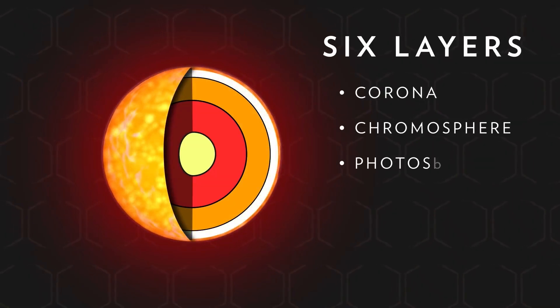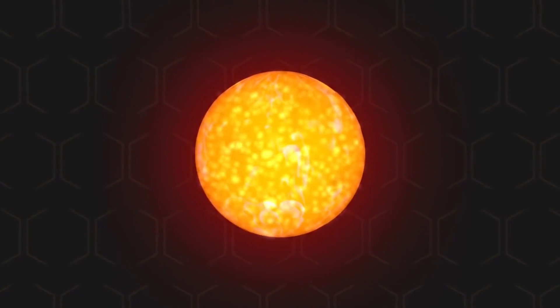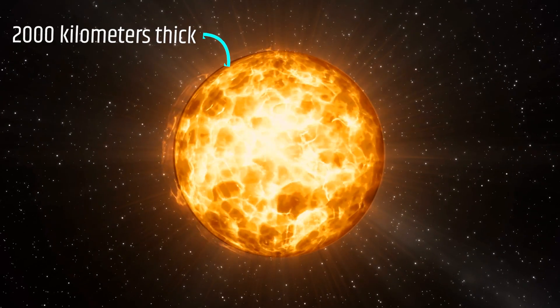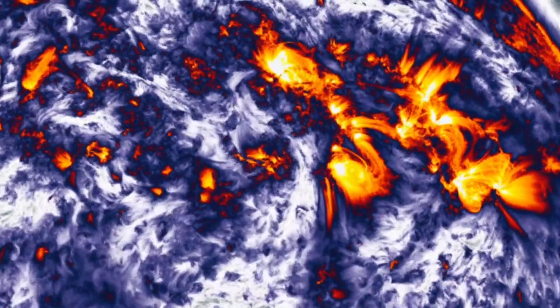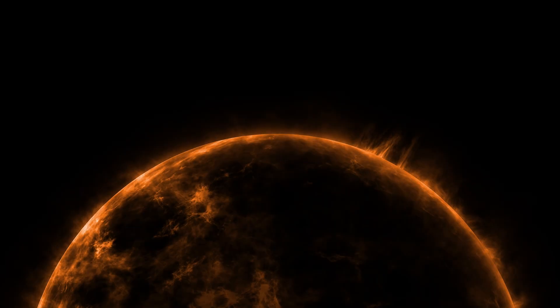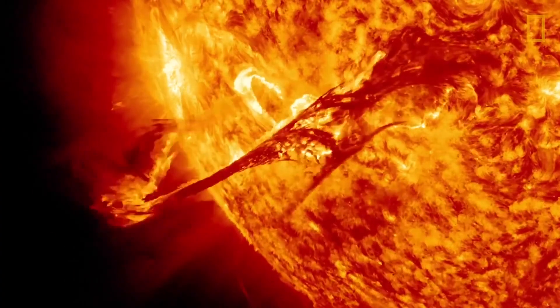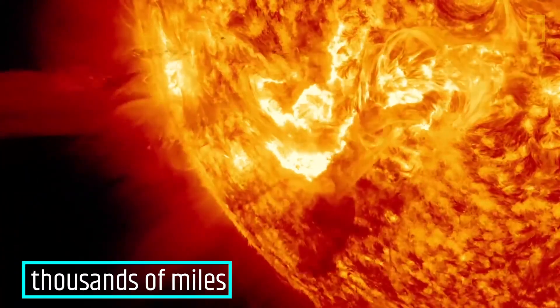After the photosphere, there is the chromosphere, which is a layer about 1,250 miles or 2,000 kilometers thick. Here, hot gases exist, resembling a burning forest. The loops of the burning plasma can extend for thousands of miles.